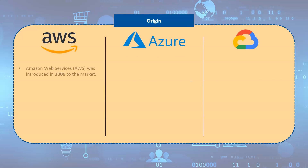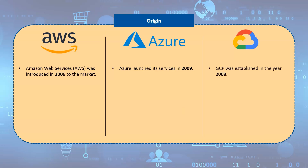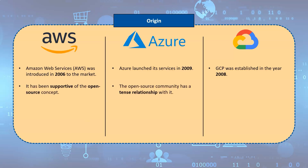In the year 2006, Amazon Web Services was introduced to the market. In the year 2010, Azure launched its services, whereas GCP was established in the year 2008. From the start, AWS has been supportive of the open source concept, but the open source community has a tense relationship with Azure.